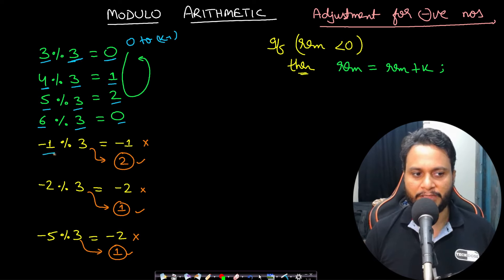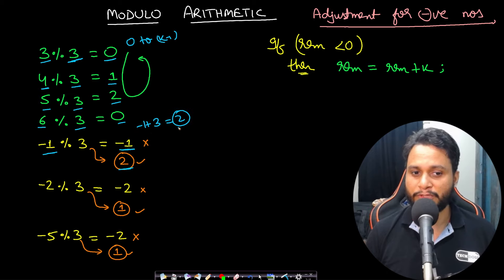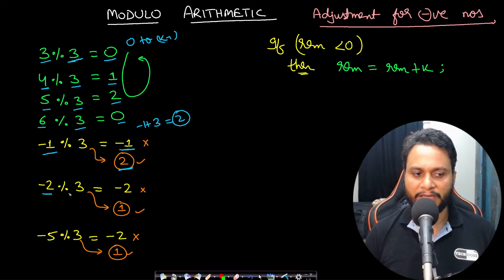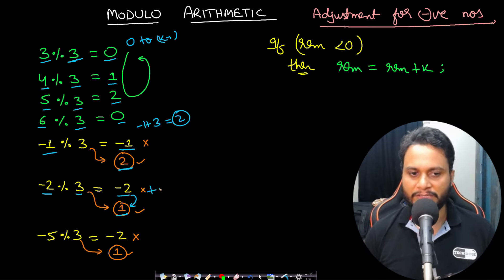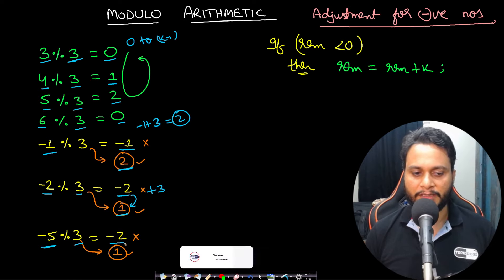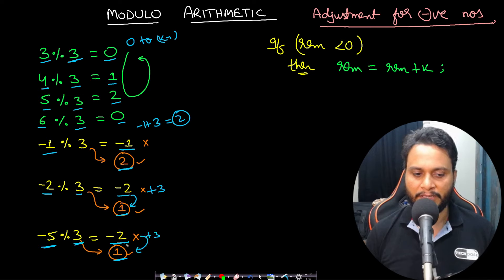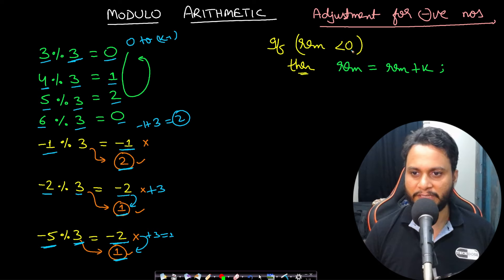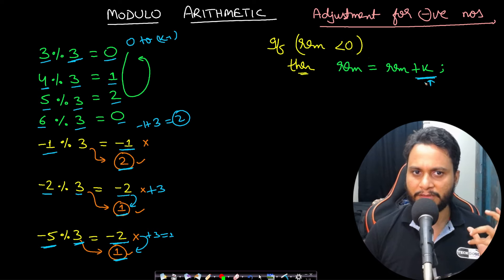For negative numbers, the modulo works differently. −1 mod 3 gives −1, which is incorrect; the correct answer is 2. You adjust by adding k, so −1 + 3 = 2. Similarly, −2 mod 3 gives −2, incorrect; correct answer is 1, so −2 + 3 = 1. For −5 mod 3, you get −2, incorrect; correct answer is 1 by adding k=3. So if the remainder is less than 0, add the divisor k to get the correct remainder.